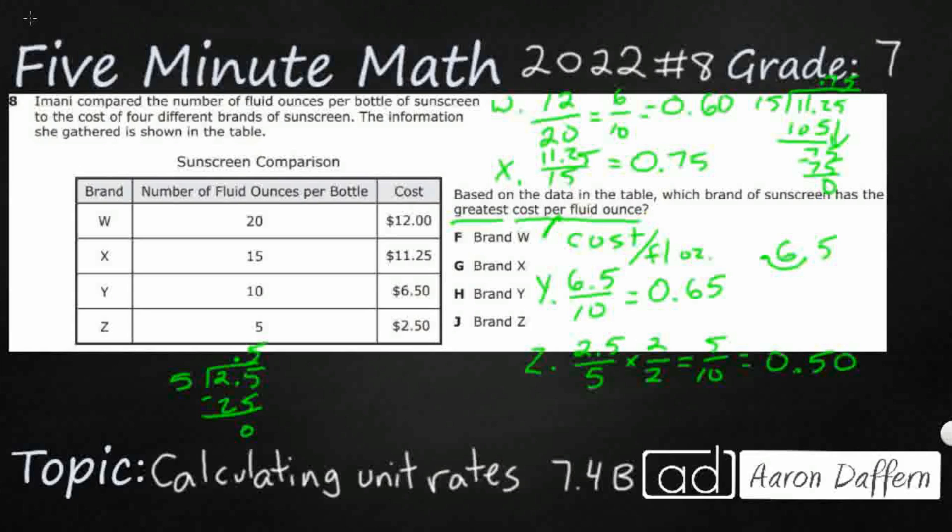Alright, so let's look at our four options here. 0.60, 0.75, 0.65, 0.50. I'm looking for the greatest. That is going to be G, Brand X, 0.75.